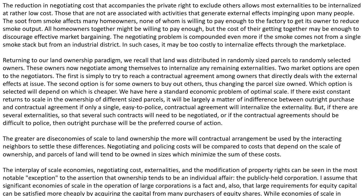Returning to our land ownership paradigm, we recall the land was distributed in randomly sized parcels to randomly selected owners. These owners now negotiate among themselves to internalize any remaining externalities. Two market options are open to the negotiators. The first is simply to try to reach a contractual agreement among owners that directly deals with the external effects at issue. The second option is for some owners to buy out others, thus changing the parcel size owned. Which option is selected will depend on which is cheaper. We have here a standard economic problem of optimal scale. If there exists a constant return to scale in the ownership of different sized parcels, it will be largely a matter of indifference between outright purchase and contractual agreement, if only a single easy-to-police contractual agreement will internalize the externality.